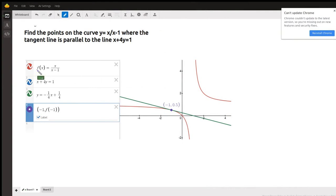Okay, here is the graph of the original function, x over the quantity x minus 1, that's the red curve. If I graph the line x plus 4y equals 1, we get this green line, which looks like it's tangent to the curve itself.